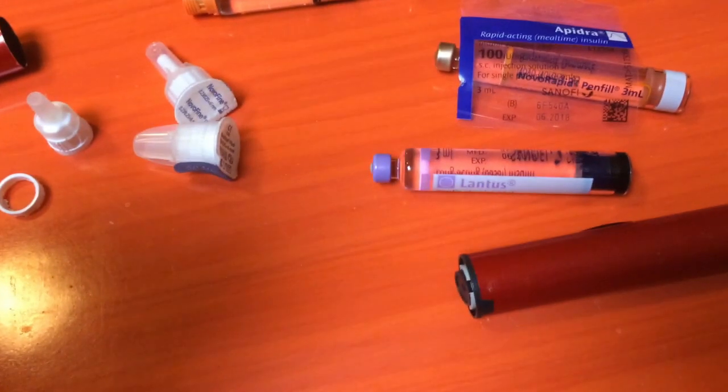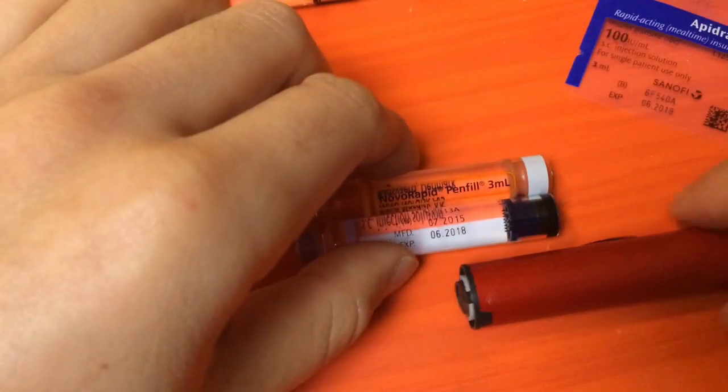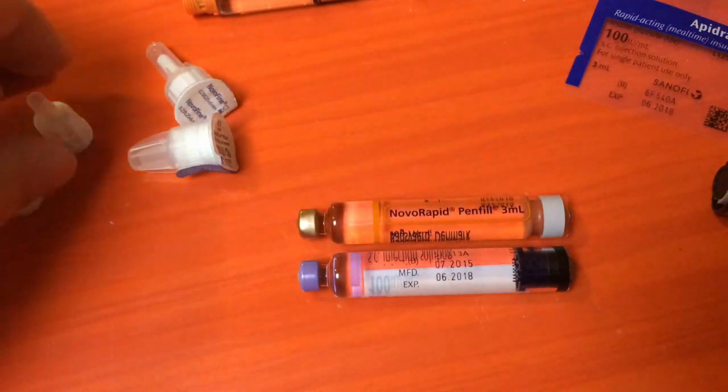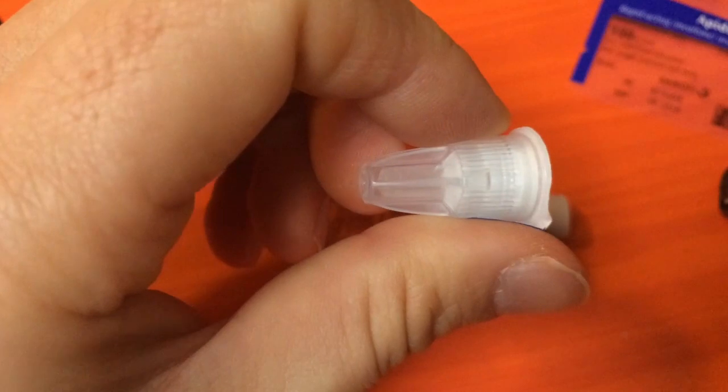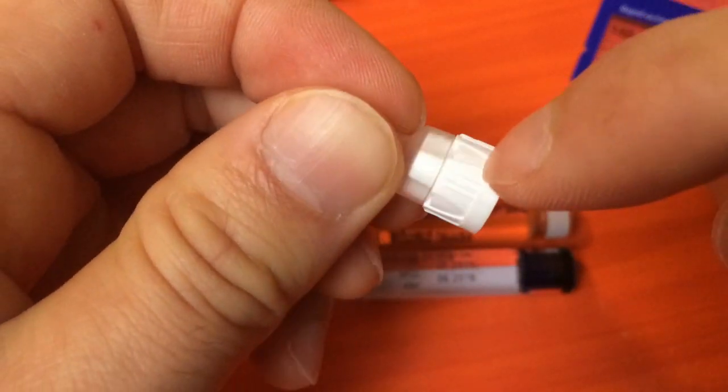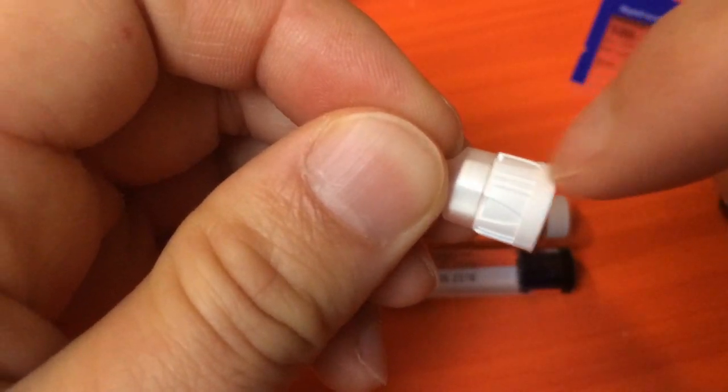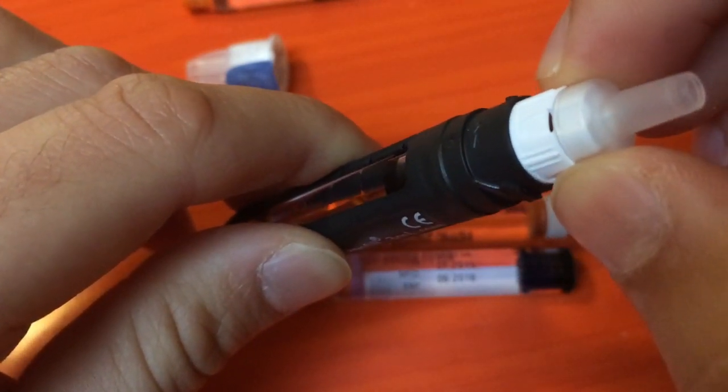Because of the length difference between the two types of vials, I got the NovoFine Plus needles. As you can see on the end here, there's a little end bit or lip. That just happens to be the right amount of plastic to make up the difference in length, and it also fits perfectly in the end of the vial holder.